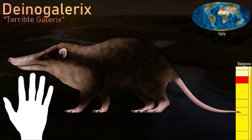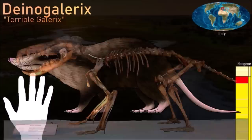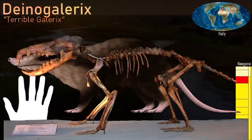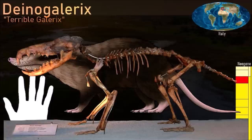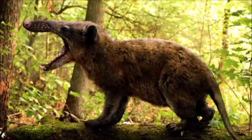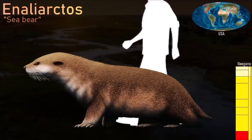Deinogaletrix was a giant, spineless, hairy hedgehog that lived on Gargano during the late Miocene, when it was an island off the coast of Italy. Like today's hedgehogs, to which it was related, it fed on a mixture of insects, snails, and other invertebrates. However, it was huge for an insectivore, weighing as much as a large cat, and its large body size would have enabled it to hunt birds and small mammals as well. Deinogaletrix is a classic example of how small mammals tend to grow large on islands where they do not face competition from larger predators. However, the giant barn owl Tyto gigantea also lived on Gargano during the late Miocene and may even have preyed upon Deinogaletrix.